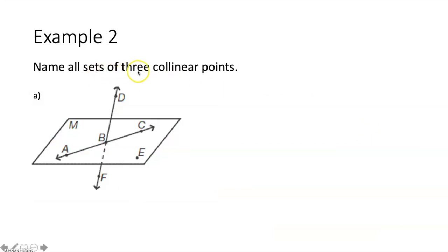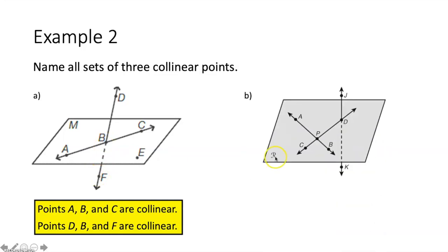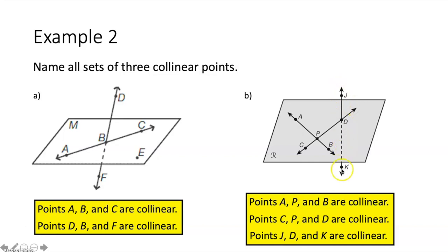Example two says name all sets of three collinear points. In plane M, point A, point B, and point C all exist within the same line, so those points are all collinear. We also have another line with points D, B, and F — so those three points would also be collinear. Part B: in plane R, one line has points A, P, and B; another line has points C, P, and D — those points would all be collinear. Lastly, there's a line going through plane R at point D with points J, D, and K — all collinear because they exist within the same line.